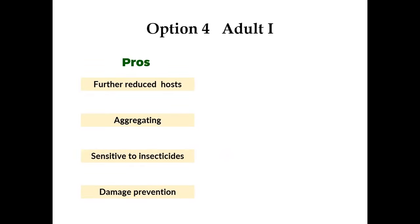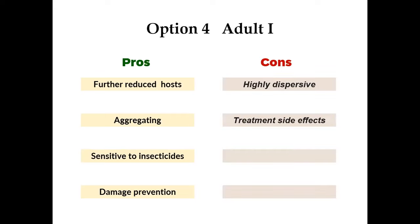For adults in stage one — that's in August — the host is very reduced, and they are aggregating on a few host trees. They are also sensitive to insecticides, and if you treat them, you can prevent damage. The downside is they are highly dispersive because they are moving back to the host at the next stage, and there's the same question about treatment side effects.